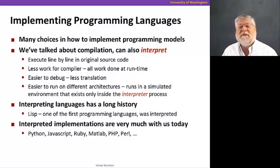Let's talk about implementing programming languages. There are many choices in how to implement programming models. For the most part in this course, we've talked about compilation, taking a C program, compiling it into assembly language instructions, which in turn are further compiled into the actual machine code that runs on our CPU. But we can also interpret a language.